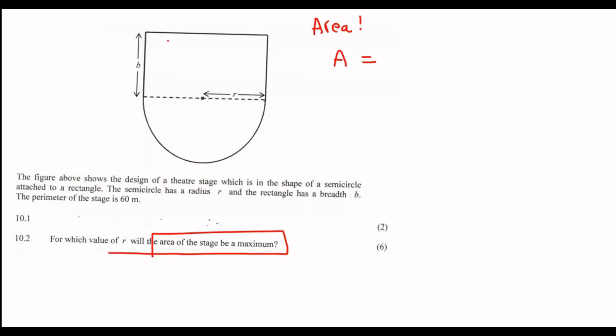We know that area is length times breadth for a rectangle. So that would be B multiplied by 2R. That's the rectangle. Plus, we know that the area of a circle is πR², but we only have half of a circle, so we'll say ½πR². Fantastic. We have just found a formula for area.